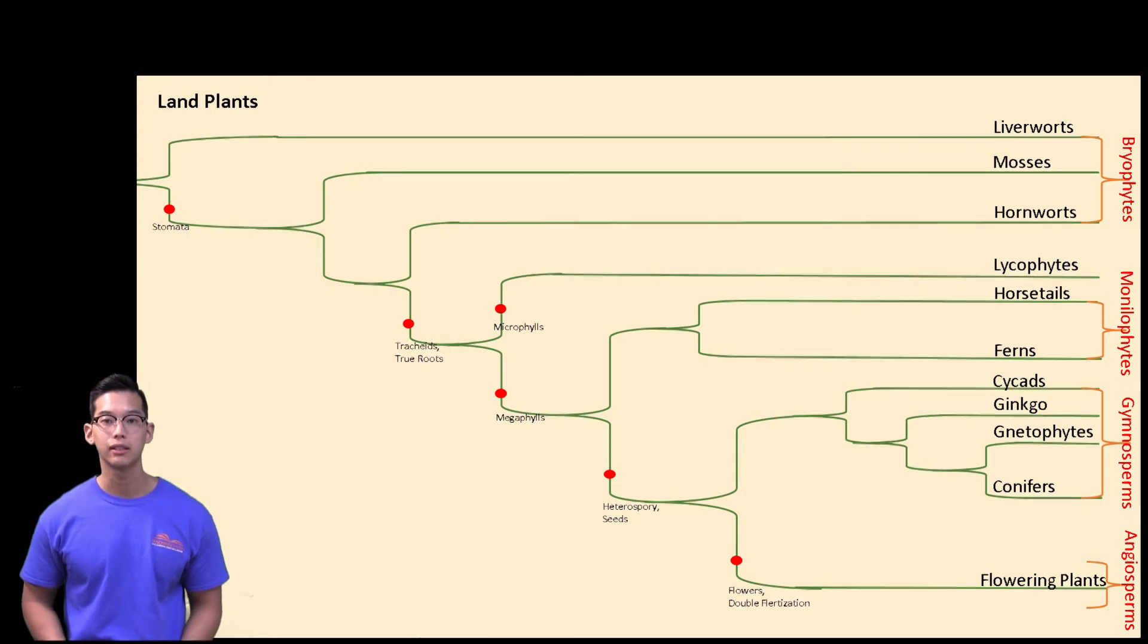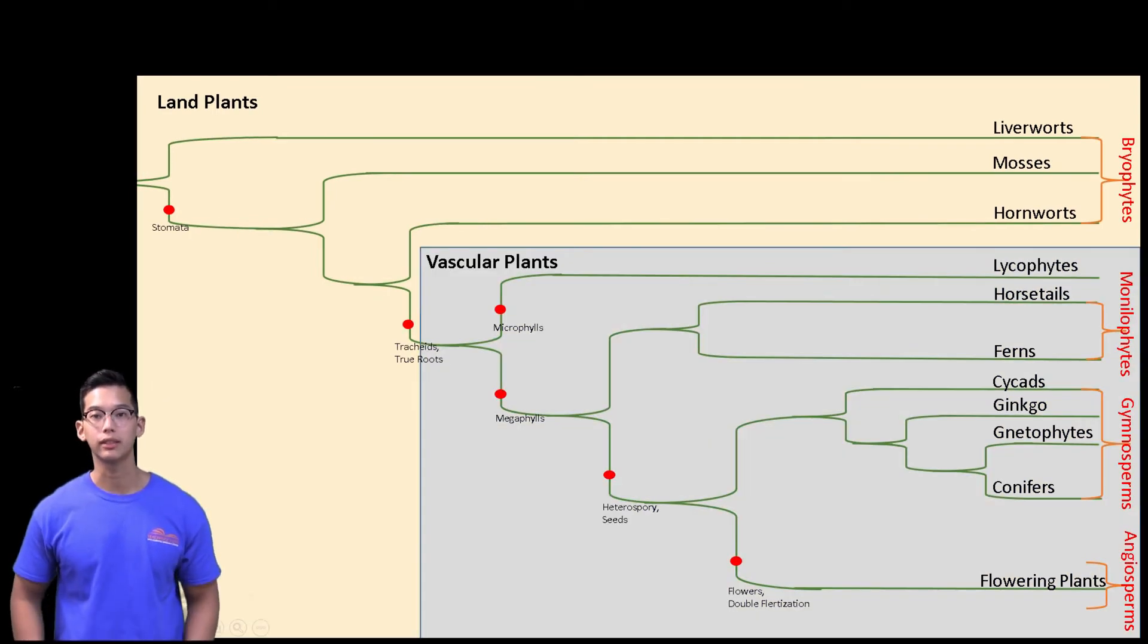Our next group of land plants that we'll be discussing is our vascular plants, and they include our lycophytes, monilophytes, cycads, ginkgos, gnetophytes, conifers, and flowering plants. Their synapomorphies include a branching independent sporophyte, internal conduction of water via tracheids in the xylem, and internal conduction of sucrose via sieve cells in the phloem.